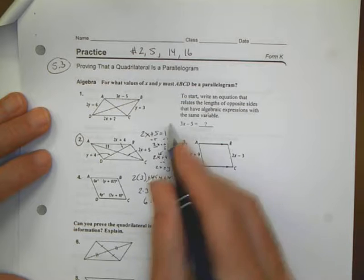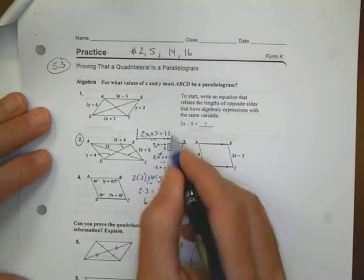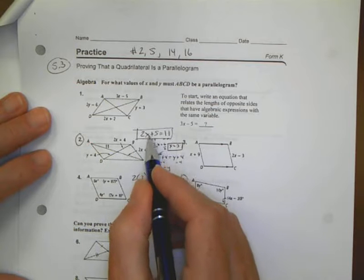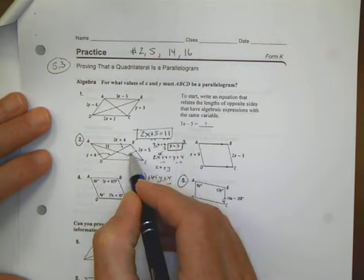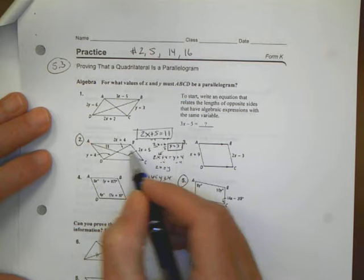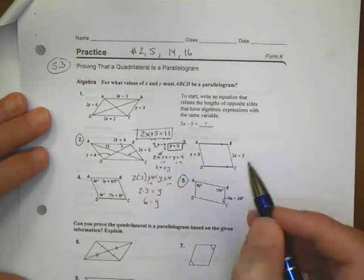I like to look at this one first in this situation just because I can easily figure out the value of y because there's only one variable when I set that equation up. It doesn't always work that way, but sometimes it does, and it's nice to take the easy approach there.